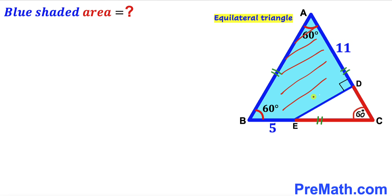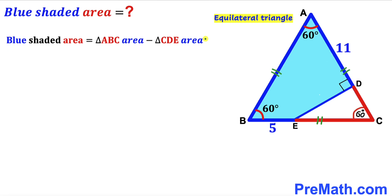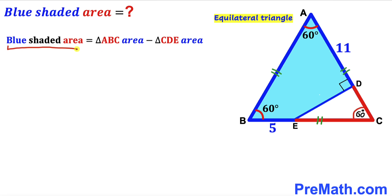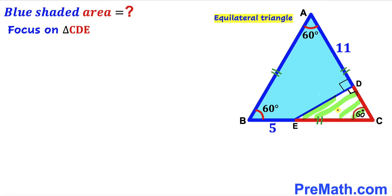Since we want to calculate the area of the blue shaded region, let's note that the blue shaded region area equals the area of big triangle ABC minus the area of small triangle CDE. So our task is to calculate both the area of triangle ABC and the area of triangle CDE. Let's now focus on the small right triangle CDE.